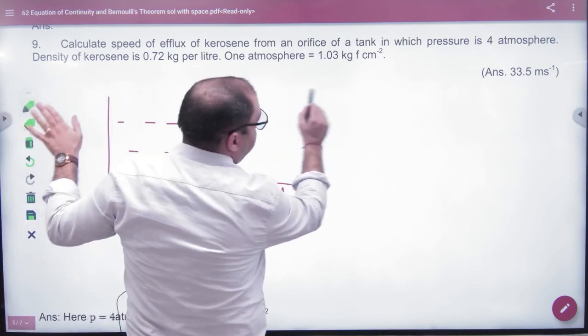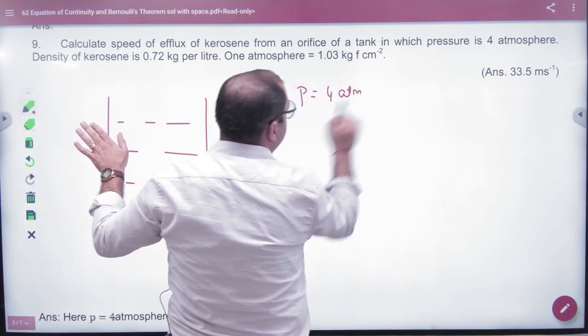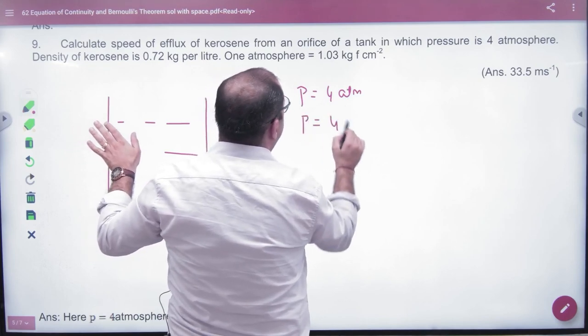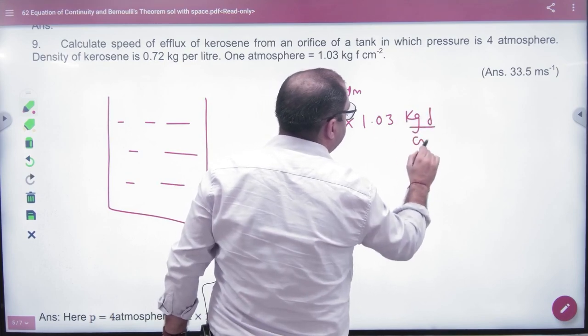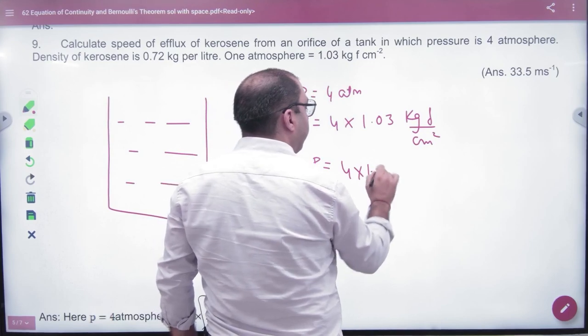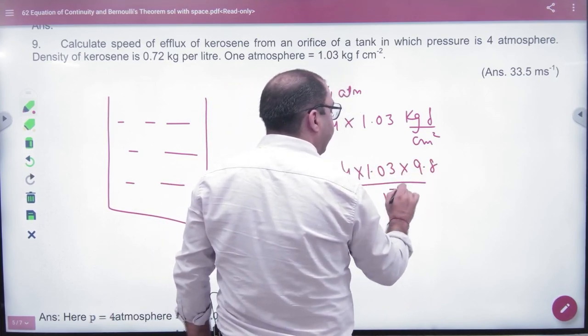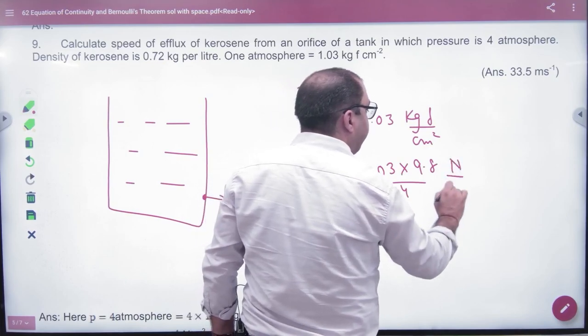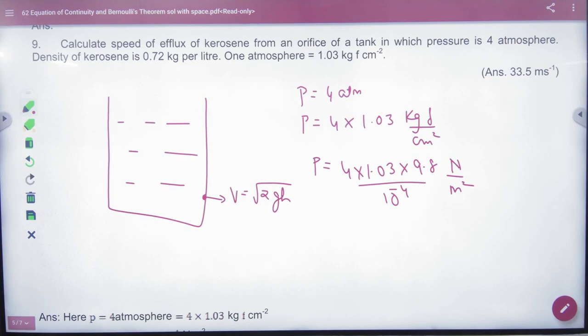What is given? I have pressure given: 4 atmospheric pressure. So pressure value is 4 into 1.03 kg force per centimeter square. From SI, 1.03 multiply from 9.8, multiply from 10 power minus 4, it will become Newton per meter square. I have converted in SI system. Then KG force of 9.8, multiply from Newton per centimeter square to meter square.